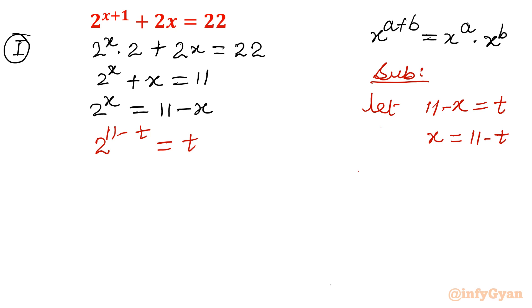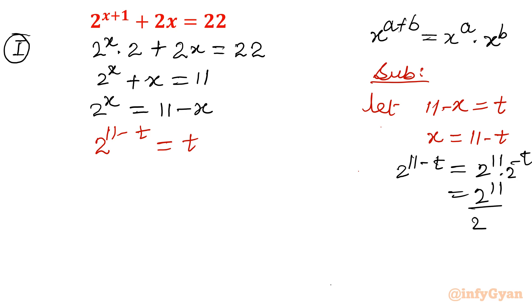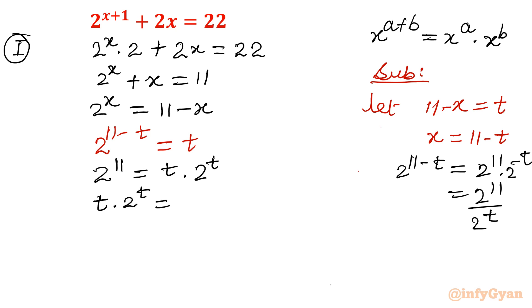Now using the same property, 2 raised to the power 11 minus t can be written as 2 to the power 11 times 2 raised to the power minus t, that means 2 raised to the power 11 over 2 to the power t. If I cross multiply, then I can write 2 raised to the power 11 equals t times 2 raised to the power t. So t times 2 to the power t equals 2 to the power 11.